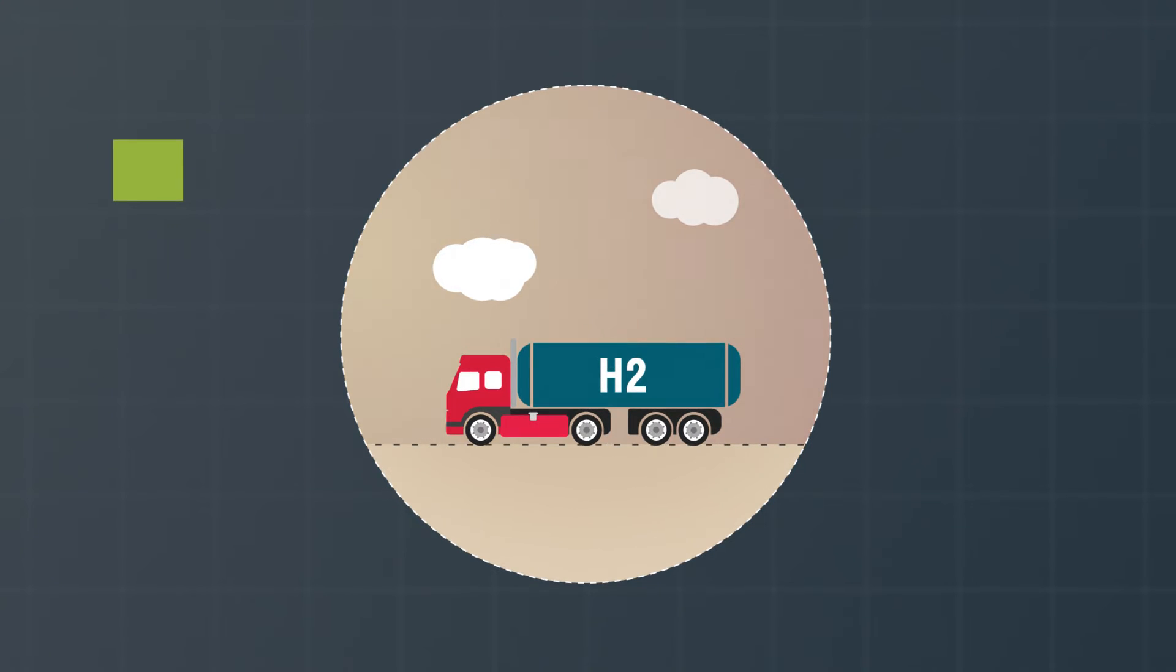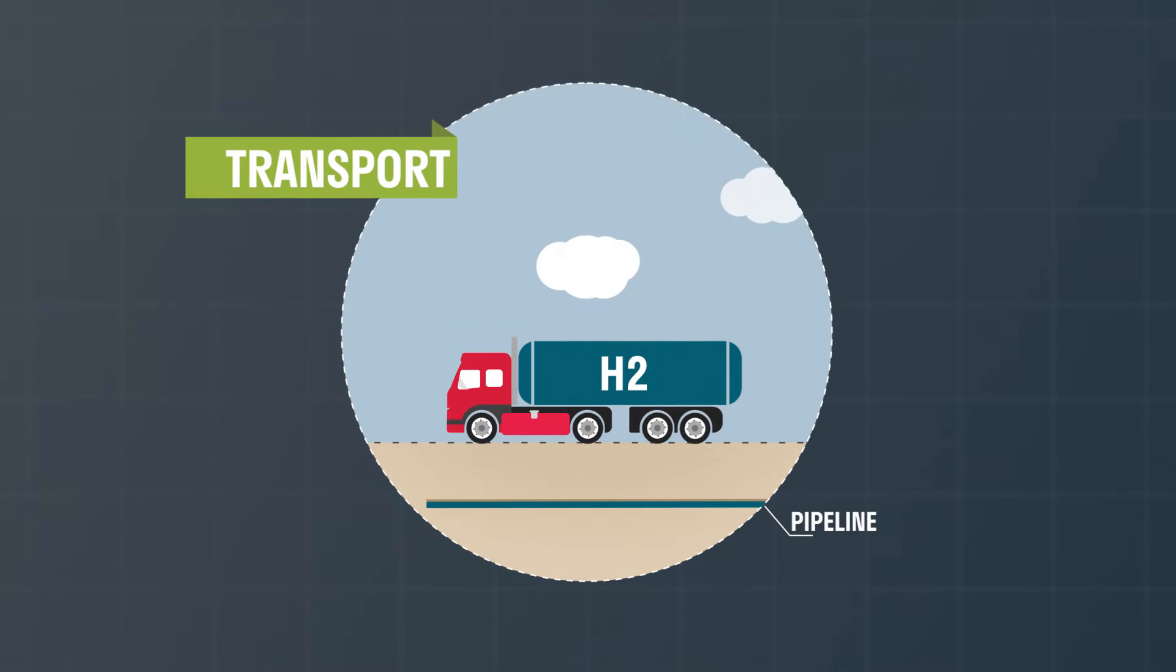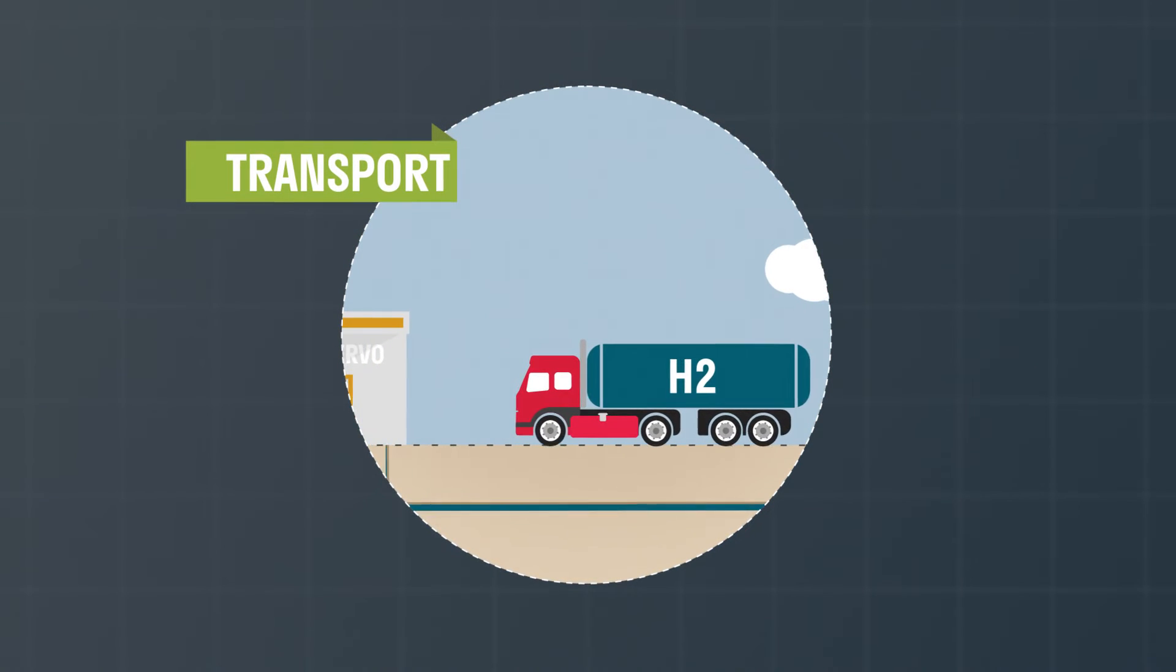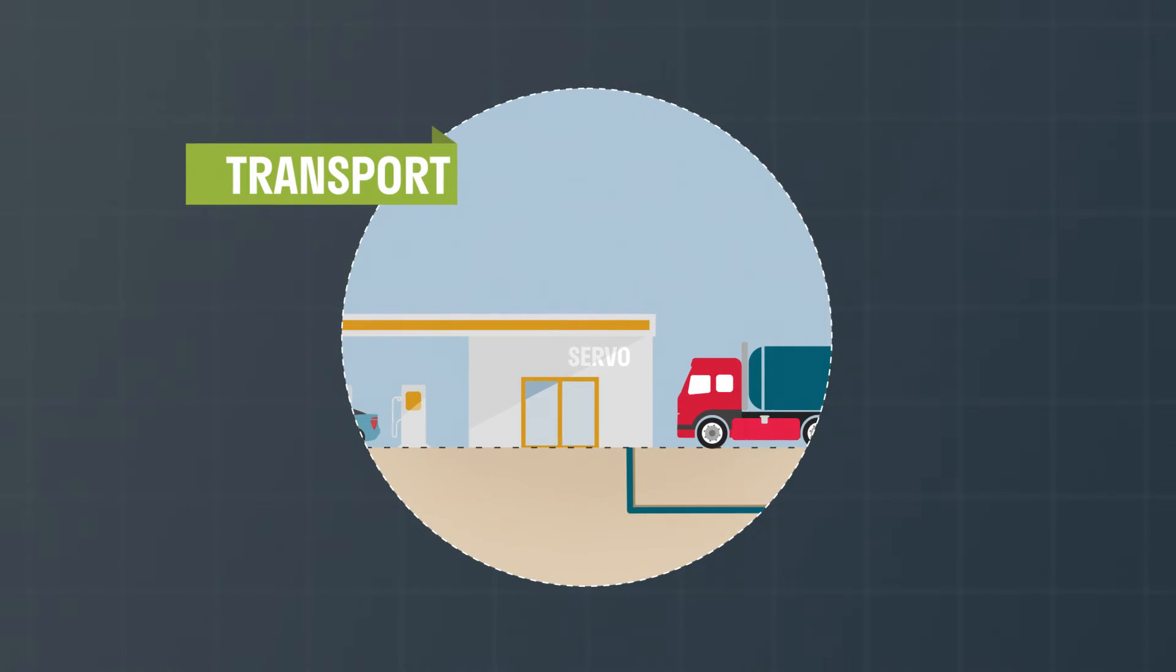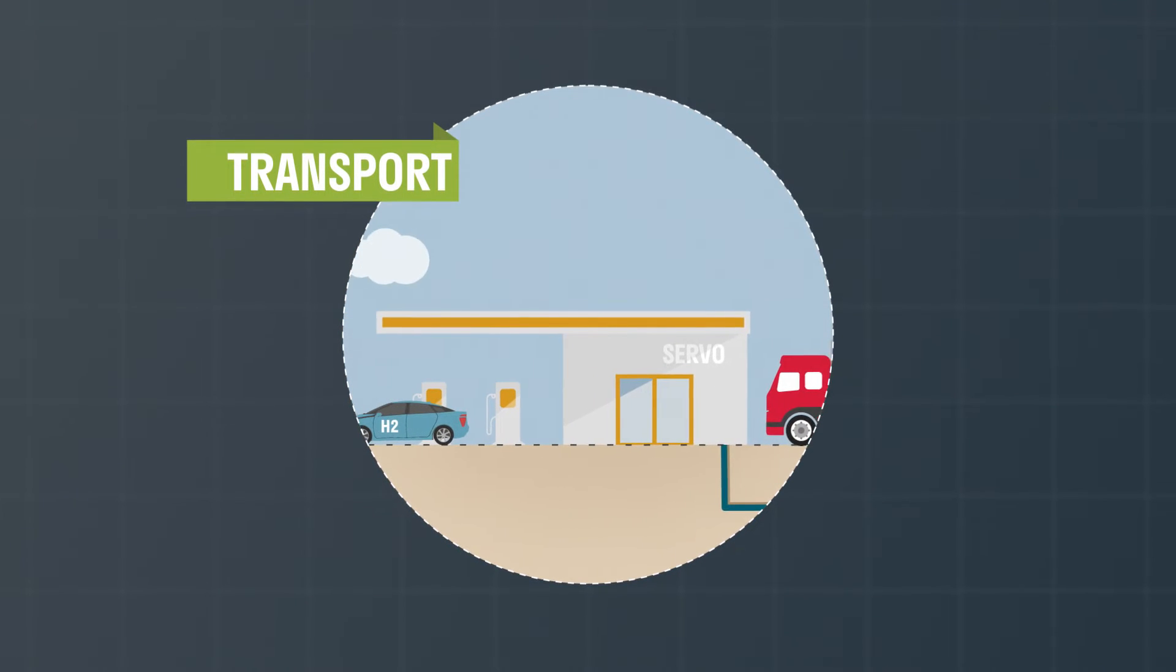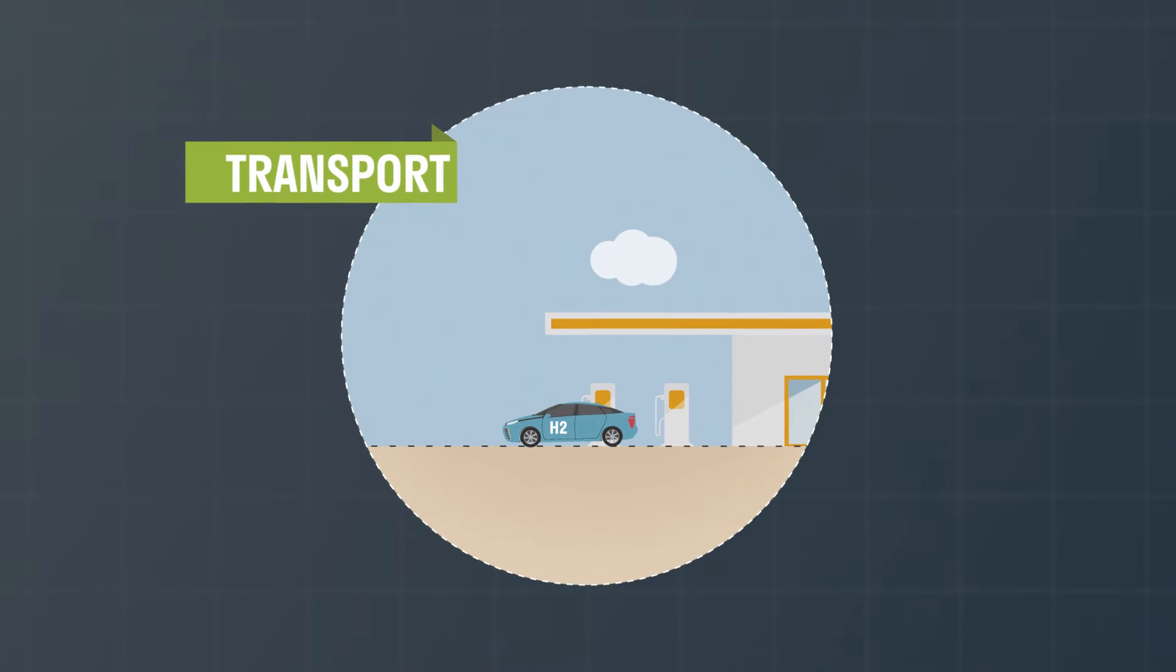Hydrogen can be easily transported by trucks or pipelines to market or for storage for later use. Hydrogen can safely power everything that petrol or gas can without emitting CO2.